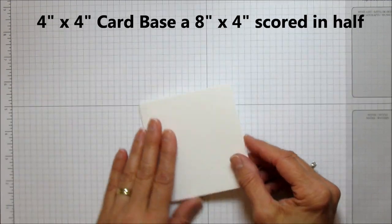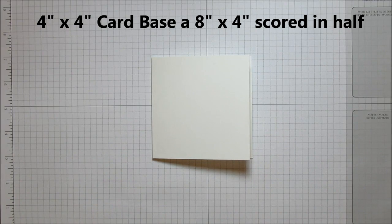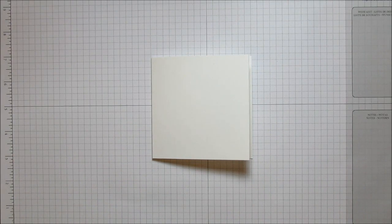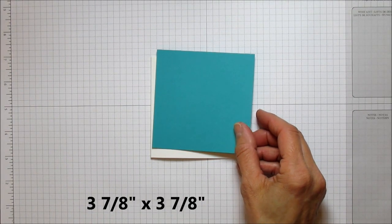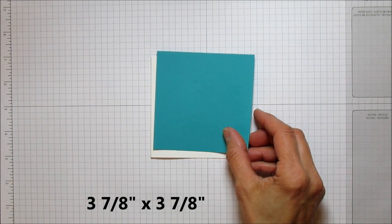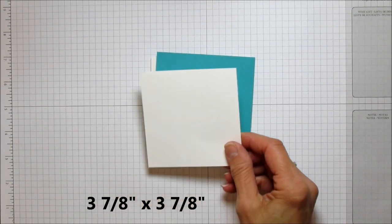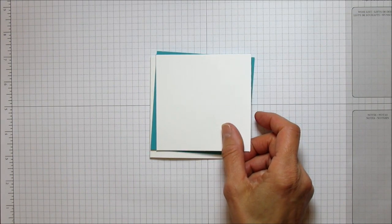This time I'm going to use Coastal Cabana. I cut the mat at 3 7/8 by 3 7/8, and then you'll need a piece of Whisper White which you'll stamp on, and this is 3 3/4 by 3 3/4.